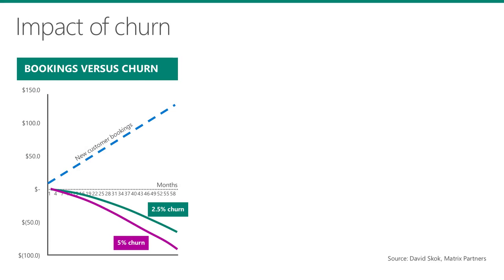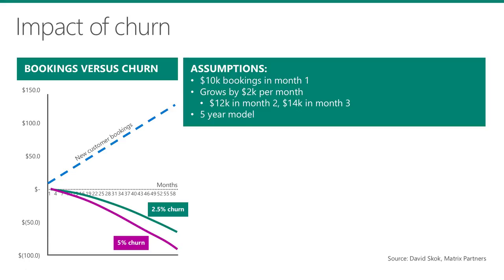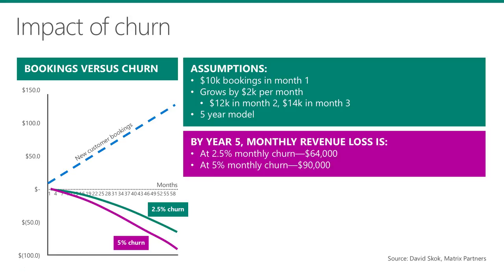This is a chart from David Skok, a partner with Matrix Partners, one of the leading venture capital firms specializing in SaaS. In this model, he shows a net revenue loss from a 2.5% and a 5% churn rate respectively. The assumption is that you start the year with $10,000 in bookings, and that you add $2,000 in new bookings every month over a 5-year period. With a monthly churn rate of 5%, at the end of 5 years you would have lost $90,000 in monthly recurring revenues — revenues you would still have if your churn rate was zero. Not only is that almost a million dollars in annualized revenue loss, but on a monthly basis it offsets new bookings.